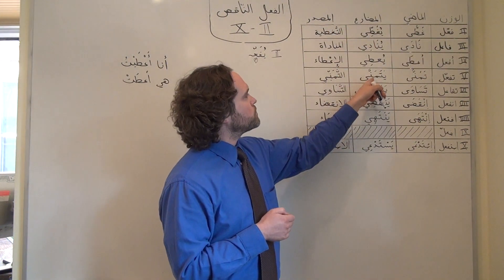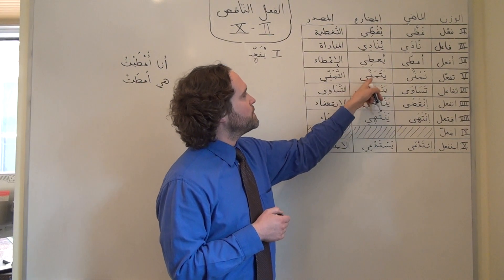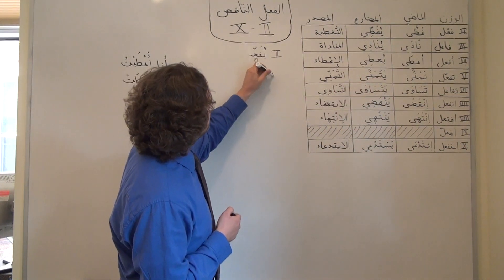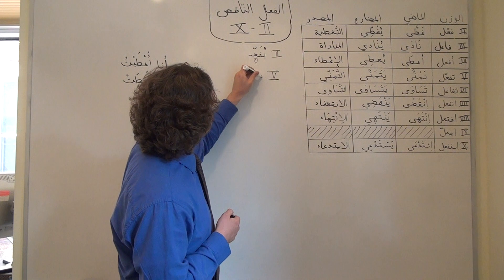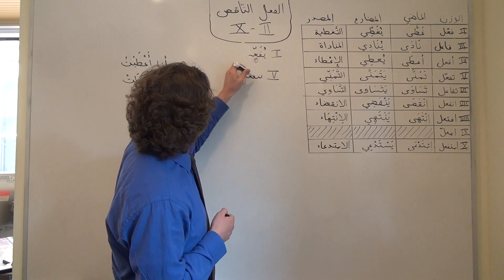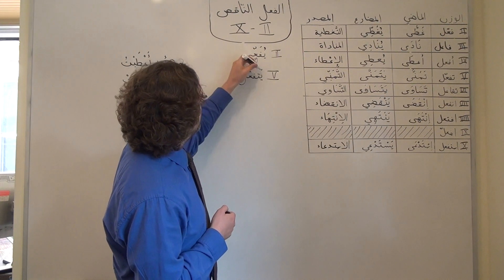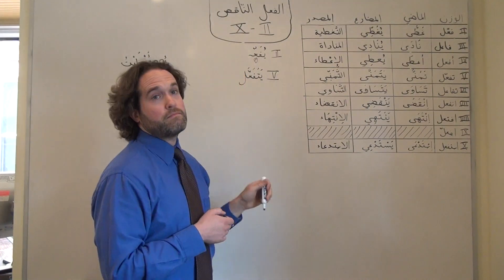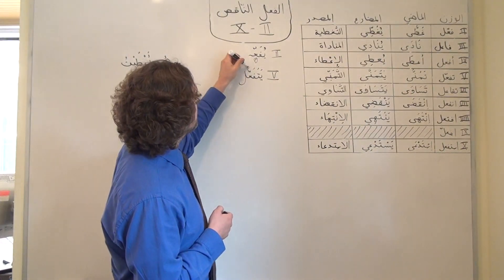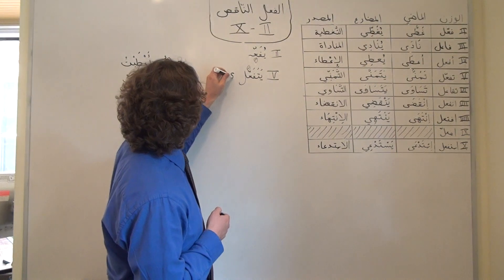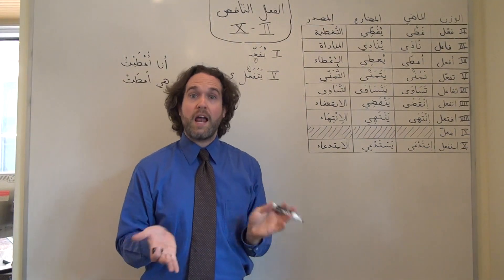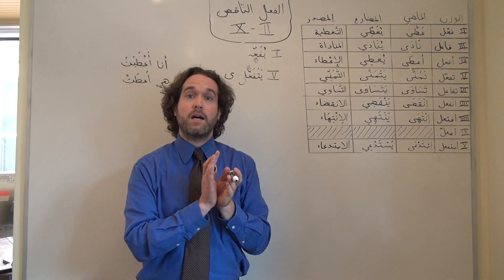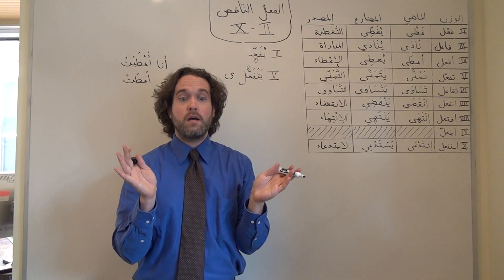Or similarly in Form 5, where we have يتمنى, Form 5 in the present tense is يَتَفَعَّل where we have a فتحة. So we can predict accurately that that فتحة is going to turn the last vowel into an ألف مكسورة, which is going to match the آ sound of the vowel.